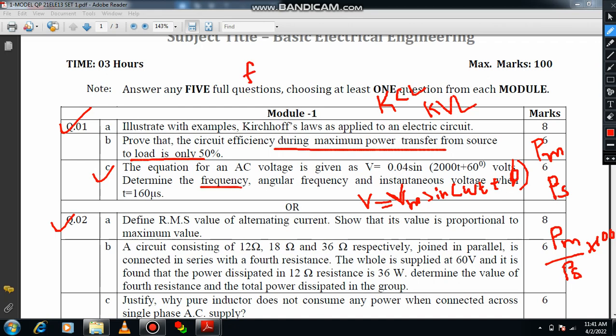From this you will get all the information. To calculate frequency F, you know that omega equals 2 pi F. Here omega is directly available as 2000, so you can calculate the frequency. You can also calculate instantaneous voltage.